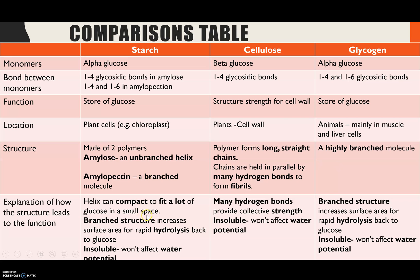Now for the highest marks — linking structure to function. For starch as a storage molecule: the helix shape of amylose means it can be compacted, like squashing a spring, so you can fit a lot of glucose into a small space. It has a double advantage because amylopectin's branched structure provides multiple exposed ends of the molecule, giving a larger surface area for enzymes to attach and therefore rapidly hydrolyze starch back into glucose to release it to the plant when needed.